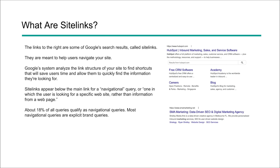The first is from HubSpot, and you can see they've got the site link search, which is part of structured data — so you can add structured data to add that. But the links below that, like free CRM software and careers, those are called site links. These are things that Google actually analyzes — the structure of your website — to find shortcuts that will help save users time and allow them to find information more quickly.